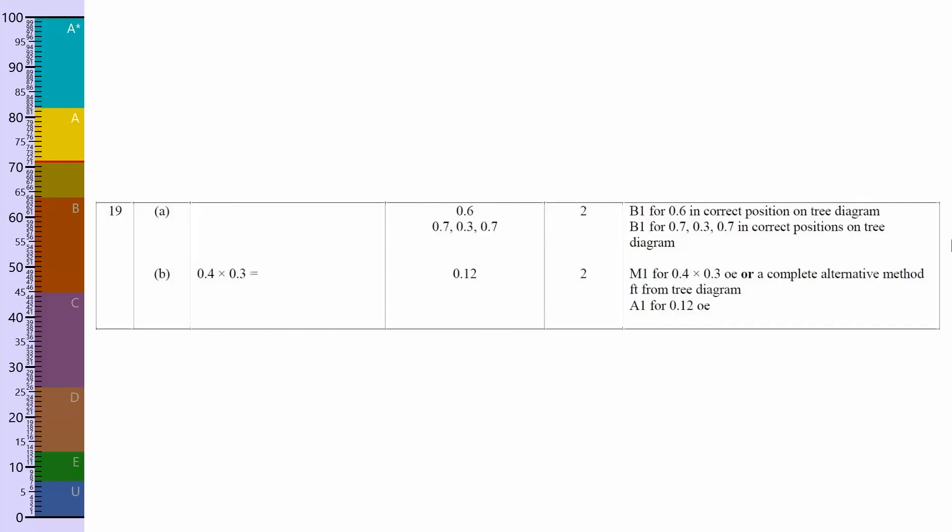So 0.12, that's it. So let's have a look at the mark scheme. You see here 0.6 just that one part gives you a mark, and then the other part of the tree diagram gives you the second mark. Then the work, 0.4 times 0.3, and the answer 0.12.